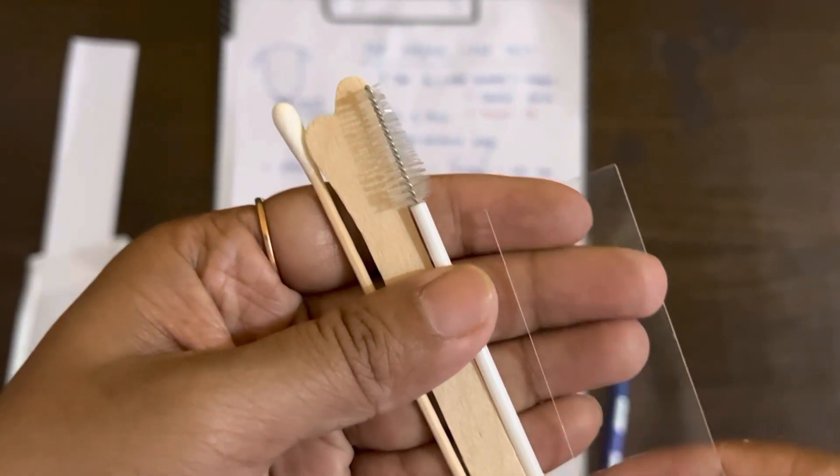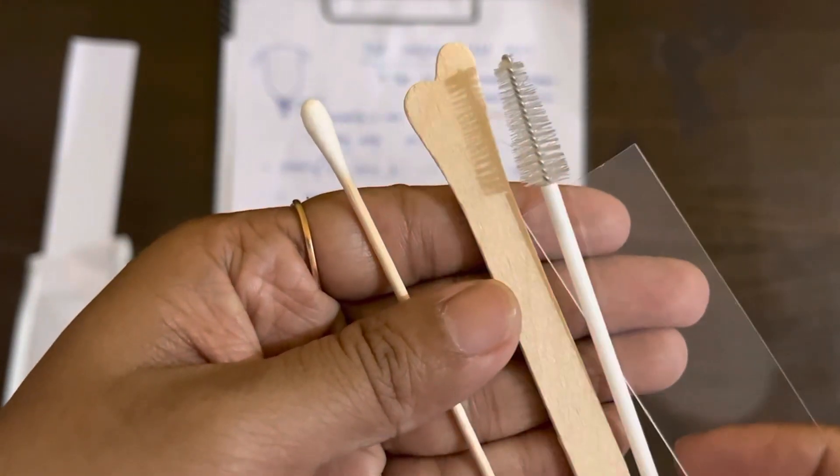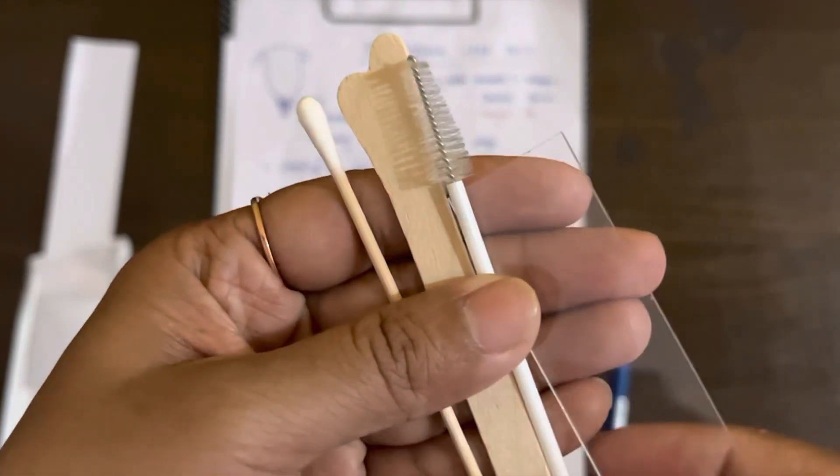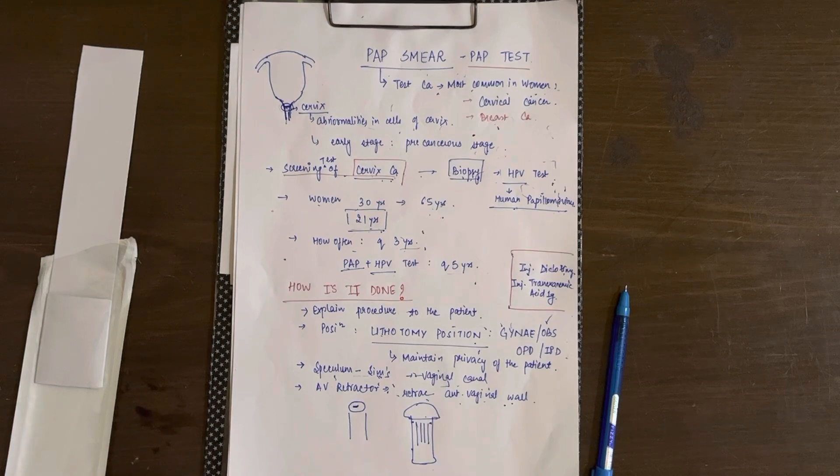These are the things present in the Pap smear kit: a slide, a soft brush, IRS spatula, and cotton-tipped applicator. Hope this was helpful, and if any doubts are there, kindly ask them. Thank you.